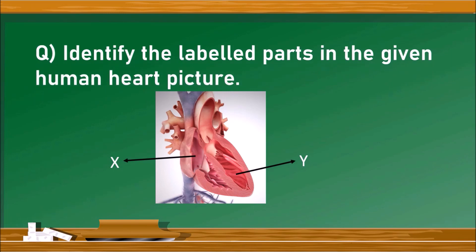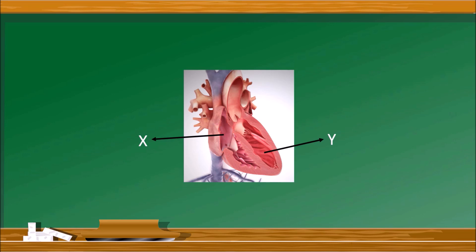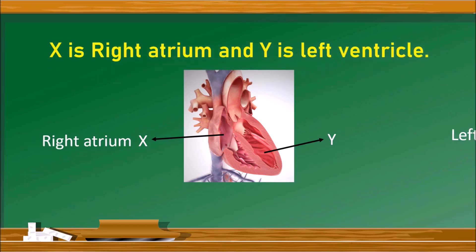The next question. Identify the labeled parts in the given human heart. The parts which are indicated as X and Y. X is right atrium and Y is left ventricle.